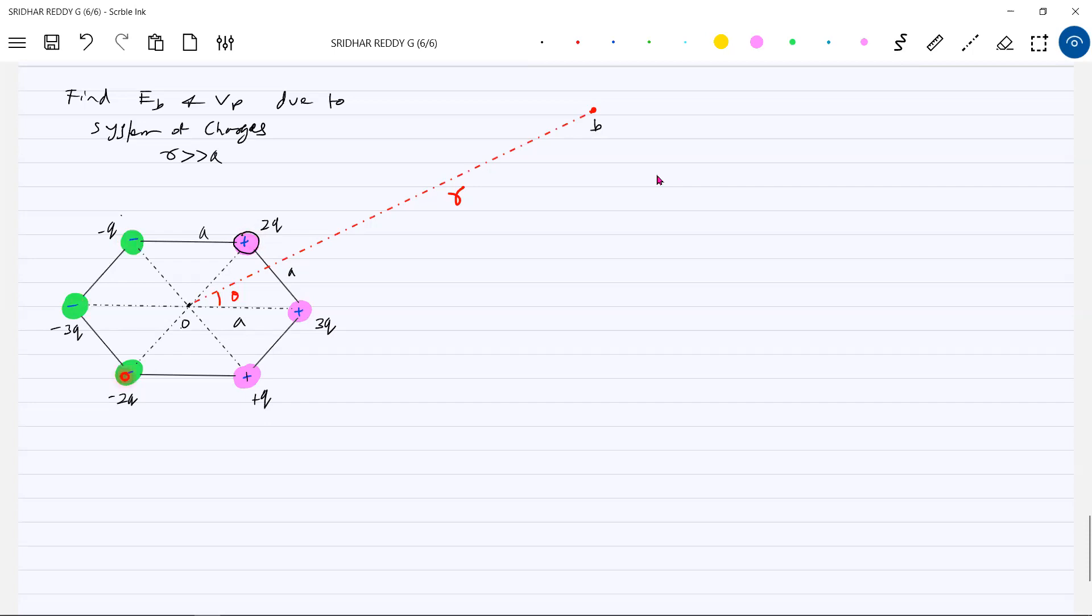Then due to these three, I'll take the vector sum of all six vectors field produced by these point charges. Then I'll get the resultant field. Is it possible? You know, enough vectors, everything. I think really we are going to struggle like anything. Very very very difficult. So since R is very much greater than A, I can replace this whole six point charges by an equivalent dipole moment system.